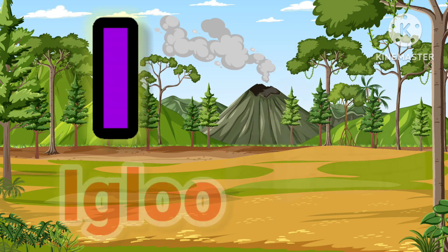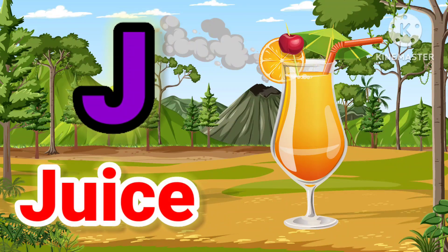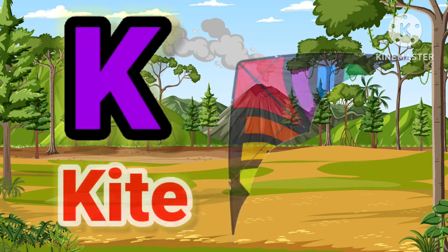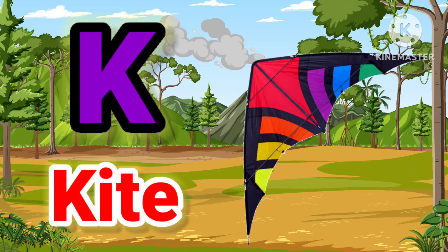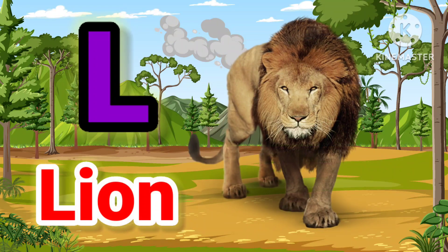I for Igloo. J for Juice. K for Kite. L for Lion.